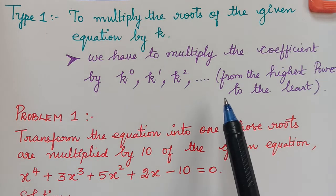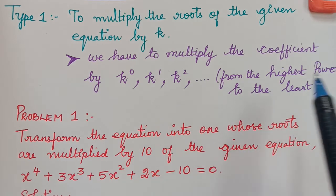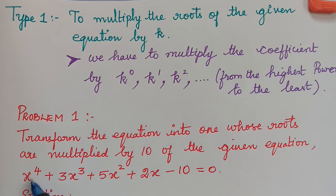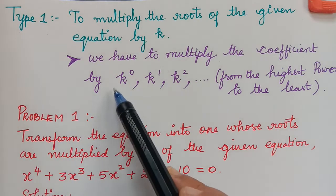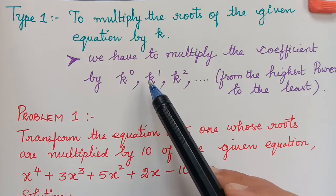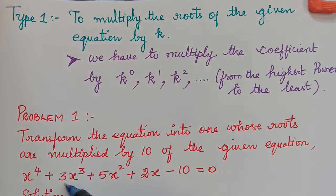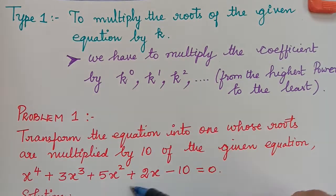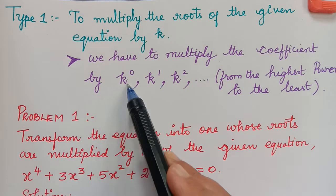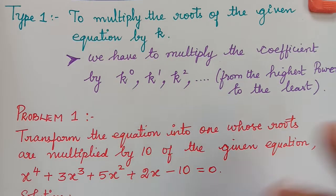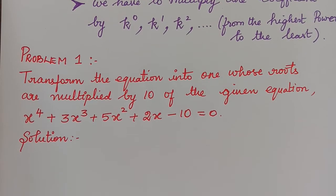The multiplication is done from the highest power to the least. Here the highest power is 4, so that term's coefficient is multiplied by k power 0. The next term x cube is multiplied by k power 1, and so on. The value of k will be mentioned in the problem. When we solve a problem, you will understand it better. Let us solve a problem on this topic.